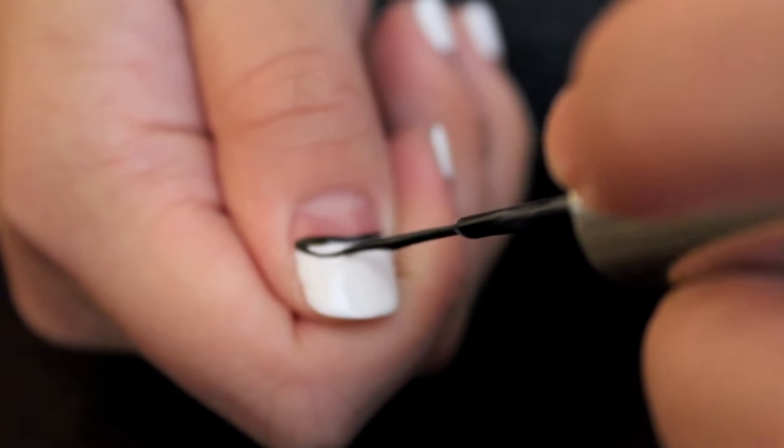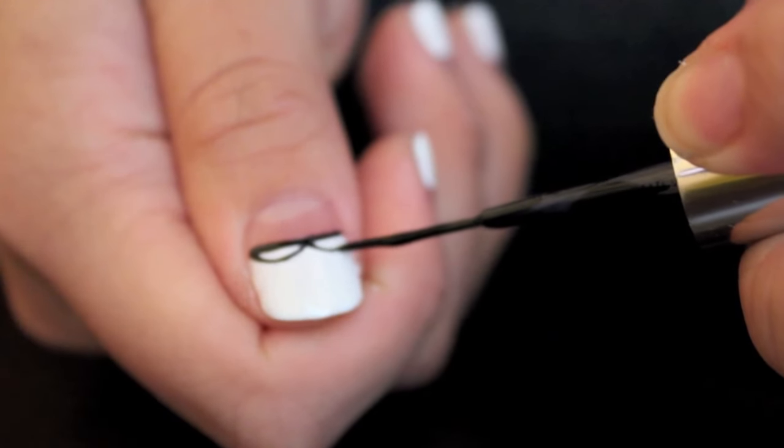After I outline the top of my nail, I'm going to make two half circles, which will end up being the collars.